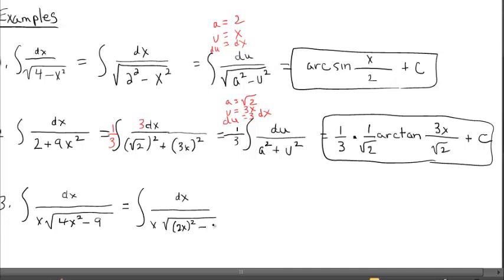It's beginning to take on the look of the third formula. It appears that a is 3, u is 2x, and du is 2 dx. It looks like I'm going to have to bring in a 2 here, which means out comes a one-half.